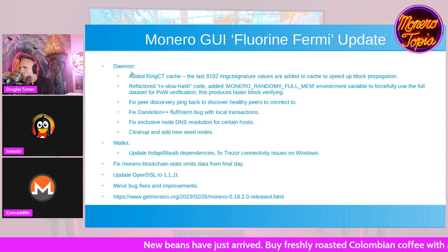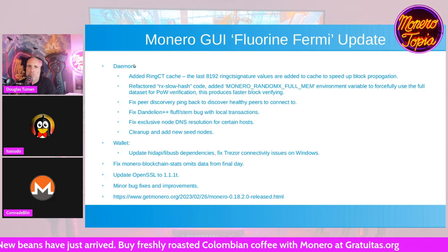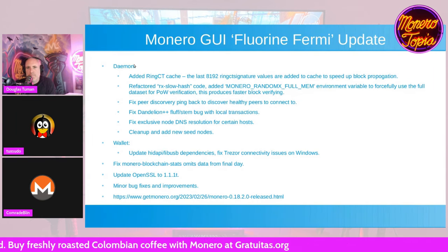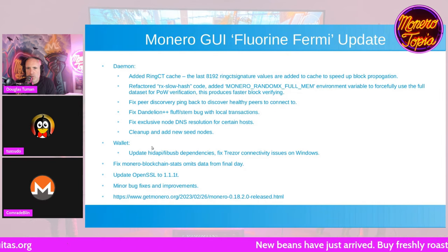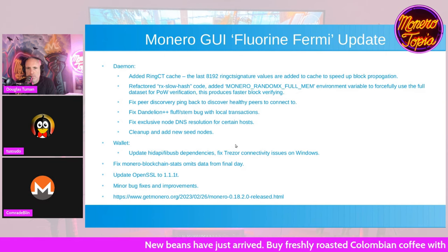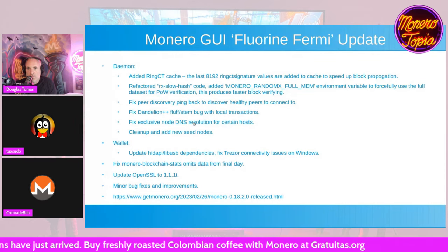The GUI has the daemon running in the background — for example, fetching node data that you don't see directly — and then there's the wallet layer. There was also a DNS resolution bug that was fixed in this update; some hosts probably didn't resolve well and they fixed that.